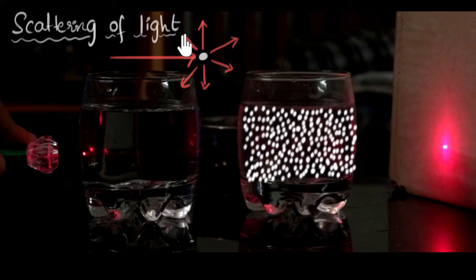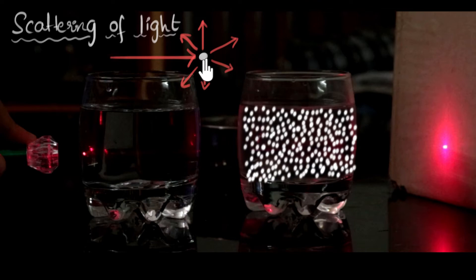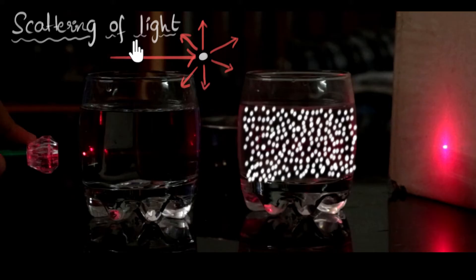What happens after this is the milk particle reflects this light in all directions. Earlier we have seen that big objects like mirrors or a ball will reflect light in a specific direction. But it turns out that when you get to these really tiny particles, they will always reflect light in all directions. We'll just accept that this is the property of tiny particles. When these tiny particles get together to form a large object like a mirror, then they only tend to reflect light in a specific direction. So this phenomenon of reflecting light in all directions is what we call the scattering of light.